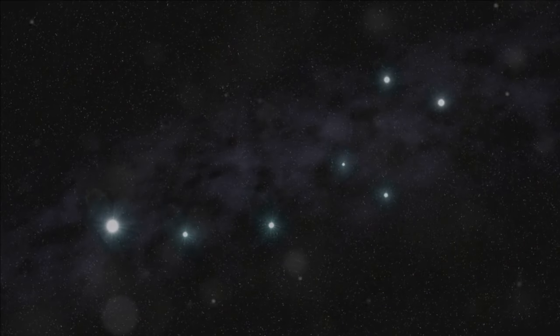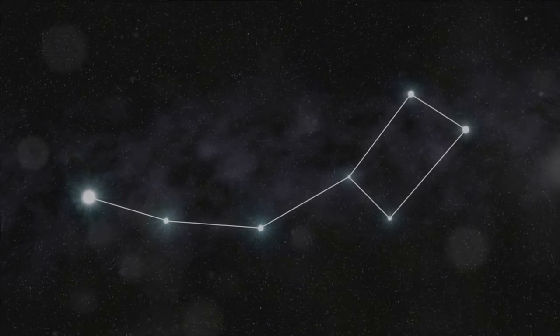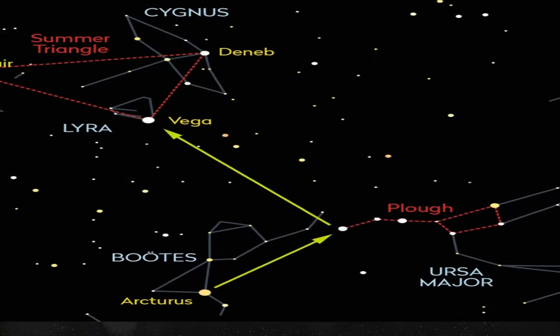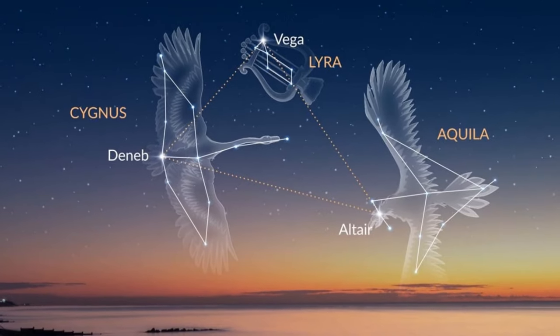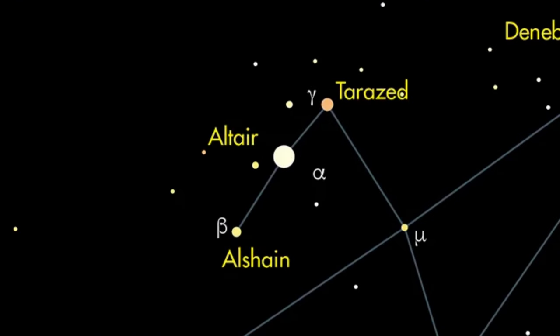To find Altair in the night sky, we must first locate the Plough asterism in Ursa Major, and then we look above and to the left to see the distinct stars of the Summer Triangle. Altair is the leftmost star in that Summer Triangle asterism. Of the three stars that make up the Summer Triangle, Altair is physically the dimmest. Altair also forms the well-known line of stars sometimes referred to as the Family of Aquila, or Shaft of Aquila.